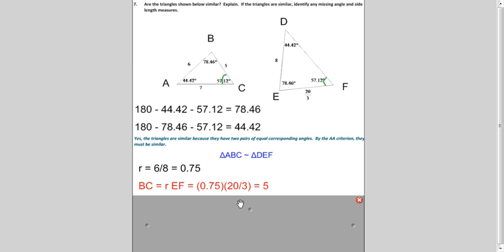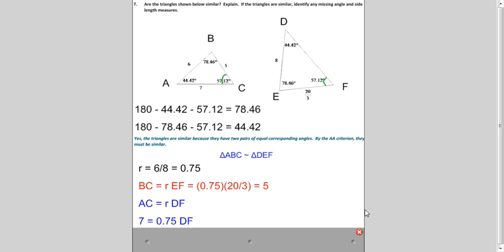Same idea for DF. DF corresponds to AC. AC is 7. And 7 times 0.75 is 28 thirds.